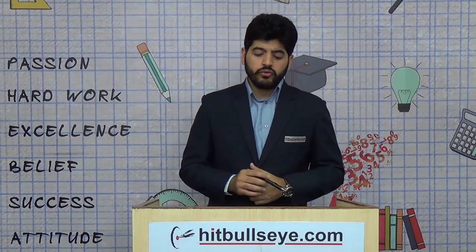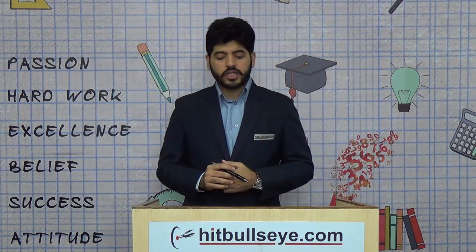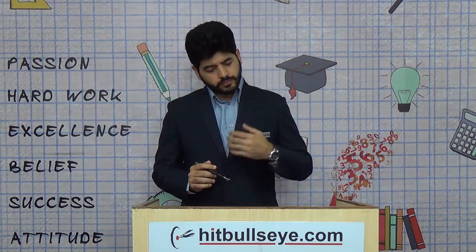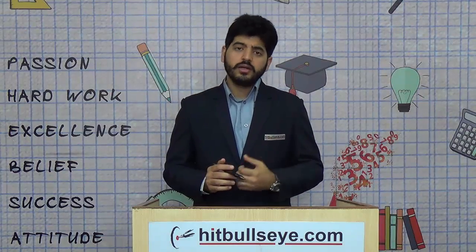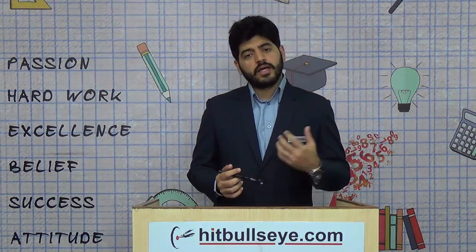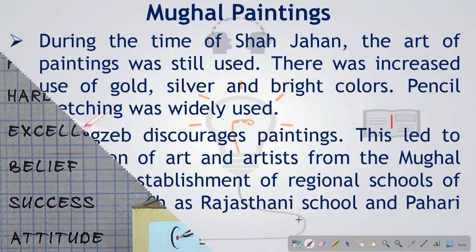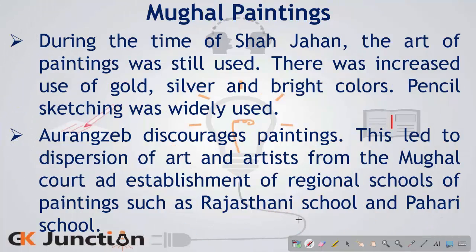After Jahangir came Shah Jahan. During Shah Jahan's time, paintings continued to depict nature as a theme, and there was an increased use of gold, silver, and other brighter colours in the paintings.